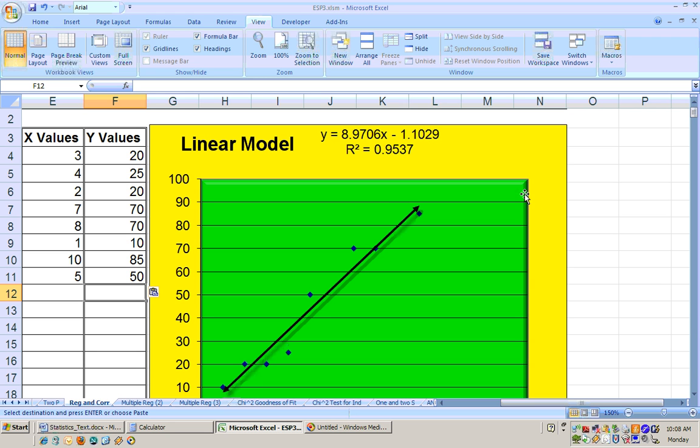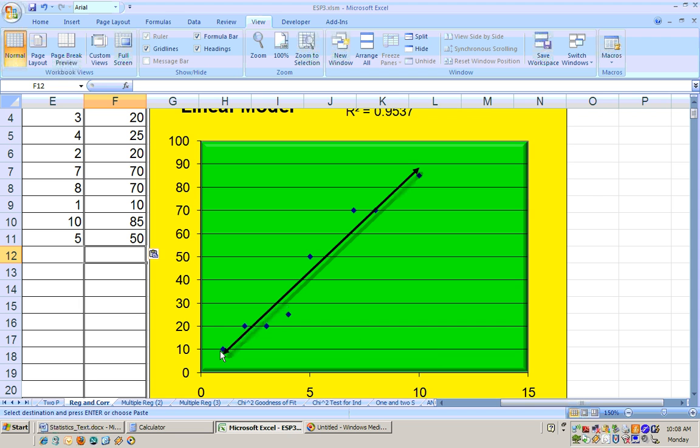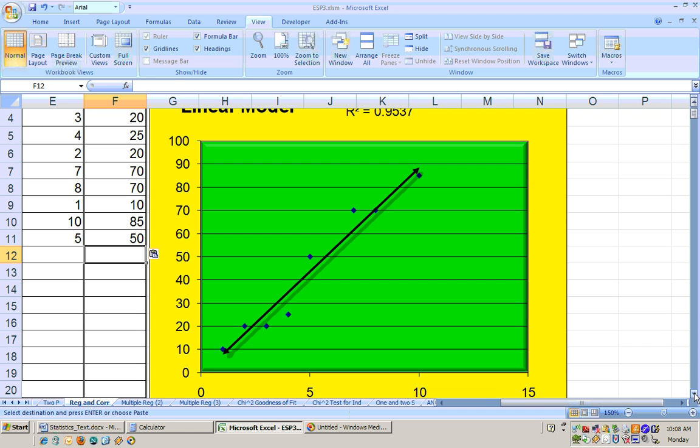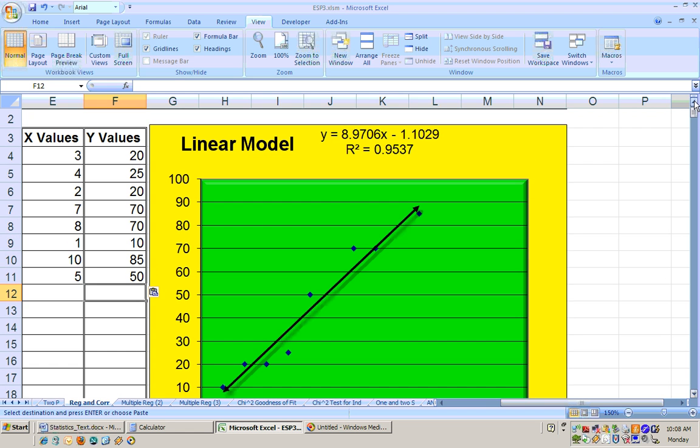This is your y-intercept here, and that's where this line would have intersected this axis here. It would have hit at negative 1. And the y-intercept doesn't make sense, but it actually tells you that if your shoe size was 0, your reading ability would be at negative 1.102. So that doesn't make sense for a couple reasons. But that's just showing you the difference, what these slope and y-intercept mean. And again, this is your regression line or line of best fit, and that's automatically calculated for you.